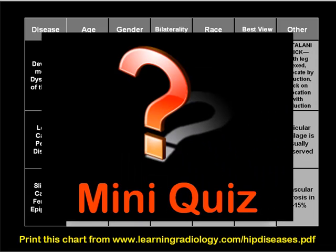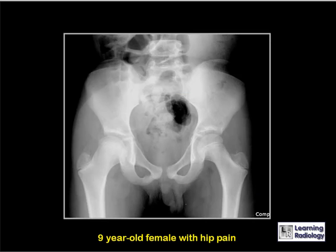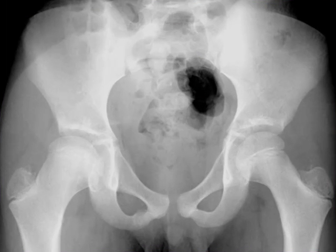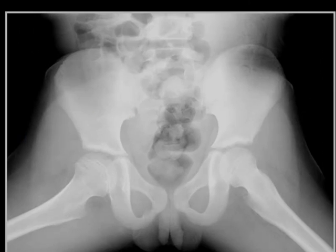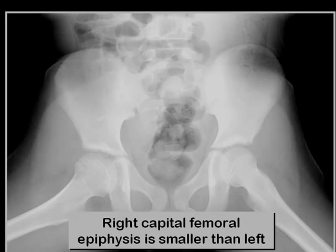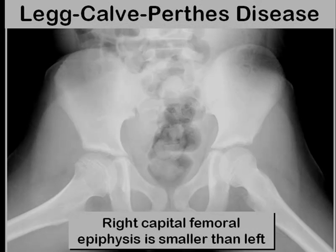It's time for your mini quiz. This is a 9-year-old female with hip pain — pause to decide which of these three diseases this child has. If you look carefully, you can see that the right capital femoral epiphysis is smaller than the left. There is no evidence of slip, and this child has Legg-Calvé-Perthes disease of the right hip.